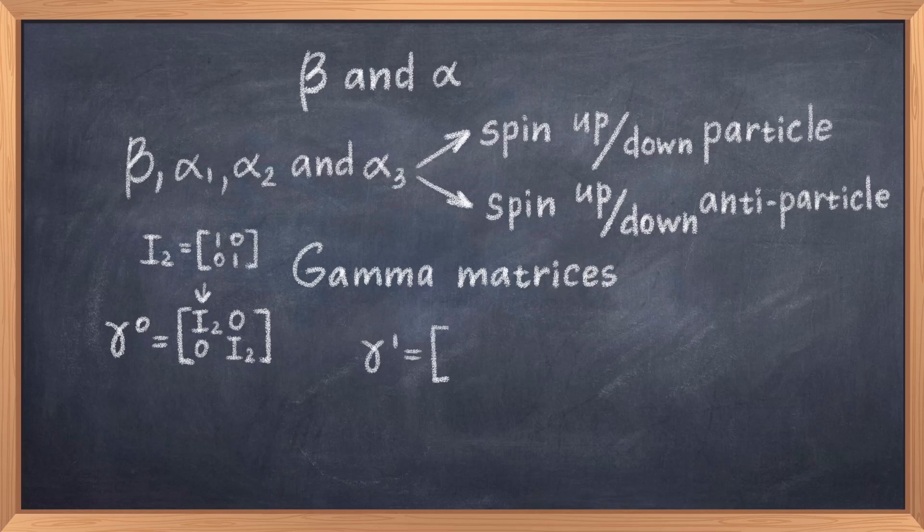Because these spin components are absent in the Klein-Gordon equation, we know that the square, thus beta squared and alpha squared, is equal to 1, such that the components do not appear in the Klein-Gordon equation. With such constraints, the values of beta and alpha were determined.